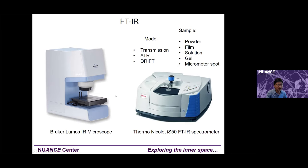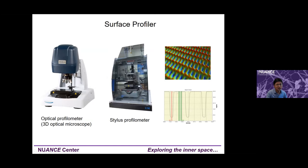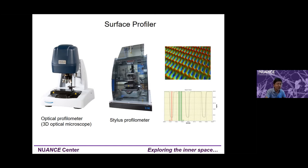We also have a surface profiler. The stylus tip contacts the surface to make a profile and gives you height information, roughness, and surface profile — especially useful for coating films. The left one is an optical profiler, which can quickly get a 3D image. Compared to the right stylus profiler, which also gives 3D but takes more time, the optical one is much quicker.